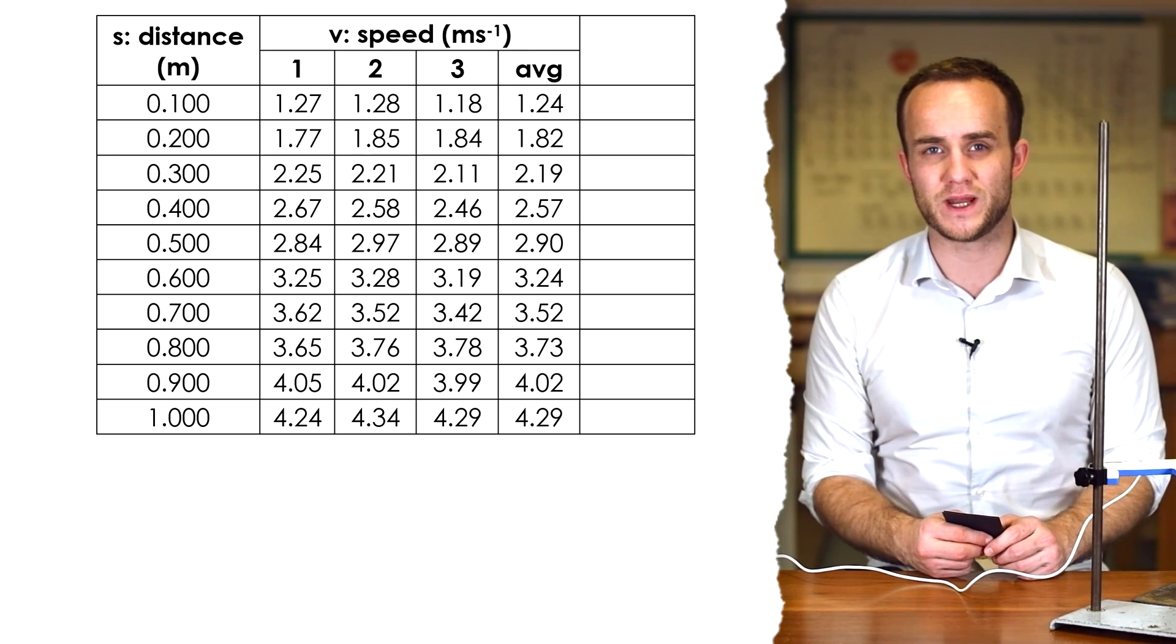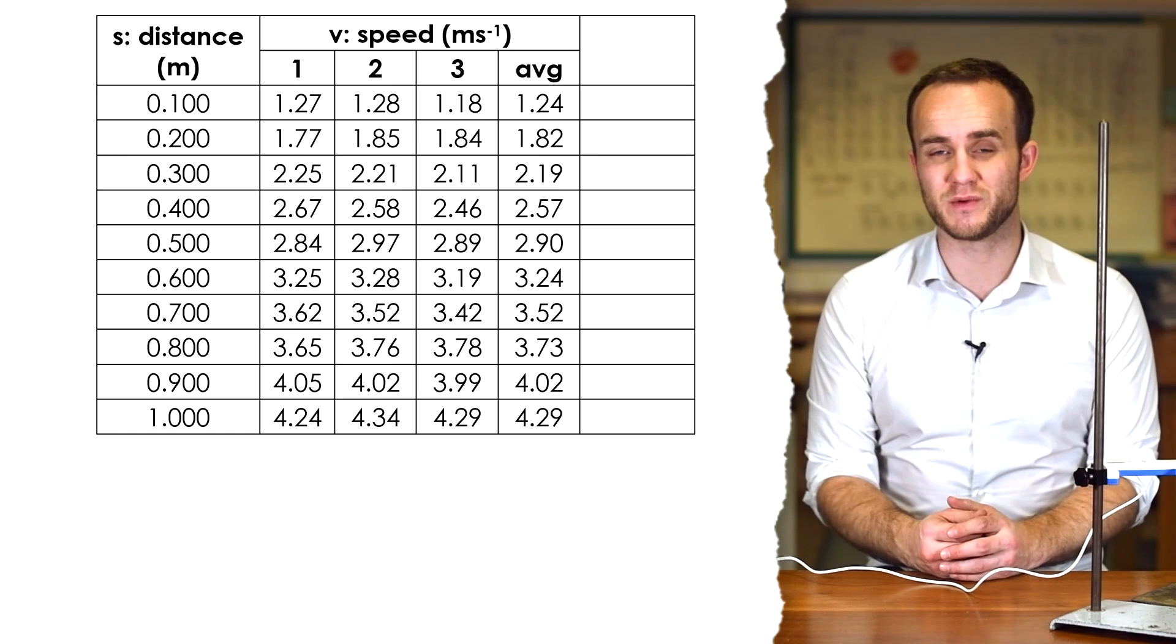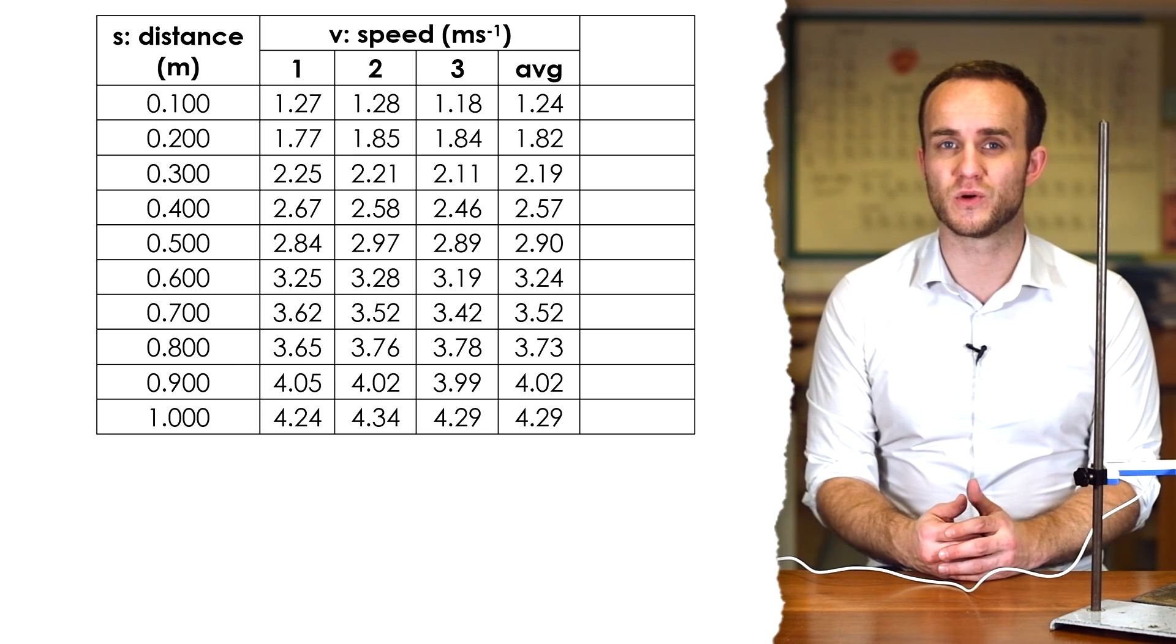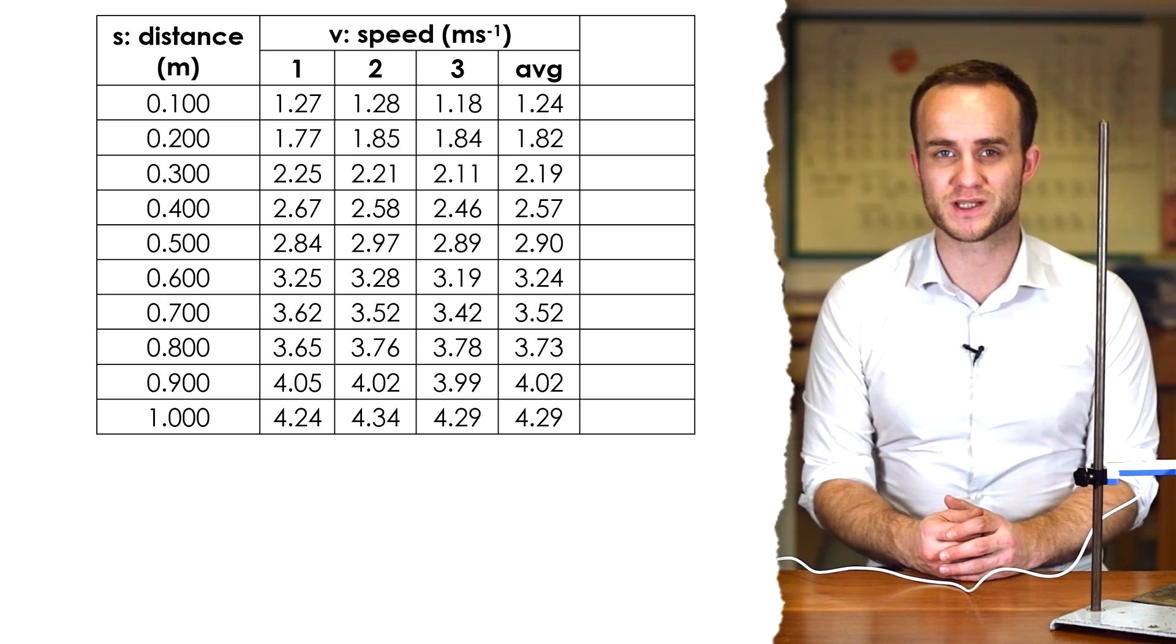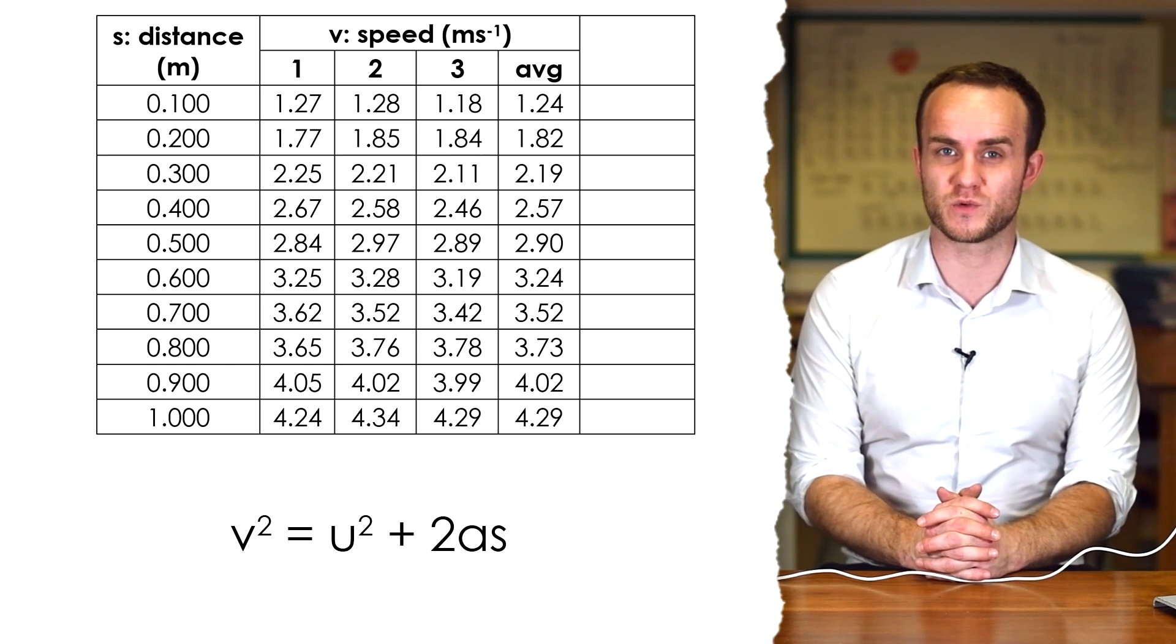So here are all of my readings. Now if we think about SUVAT, we're dealing with S, U is always going to be zero because we're just dropping it - and as an aside it's important that you do drop it, you don't push it downwards or push it upwards as you let go. V, well our data logger is recording that, and A, that's our acceleration we want to find that. So the equation that we want is V² = U² + 2AS. U is always zero so that just turns into V² = 2AS.